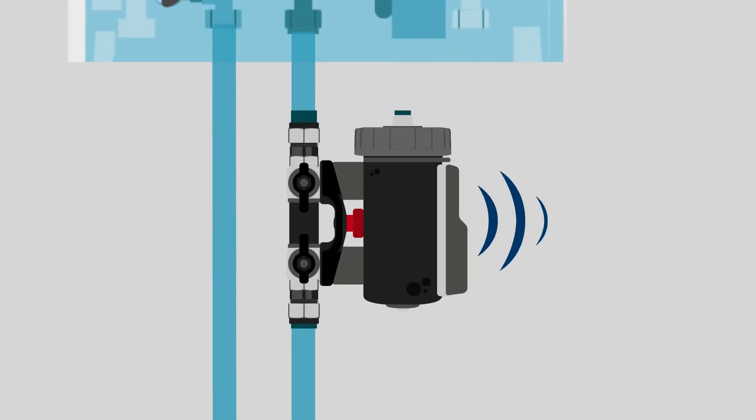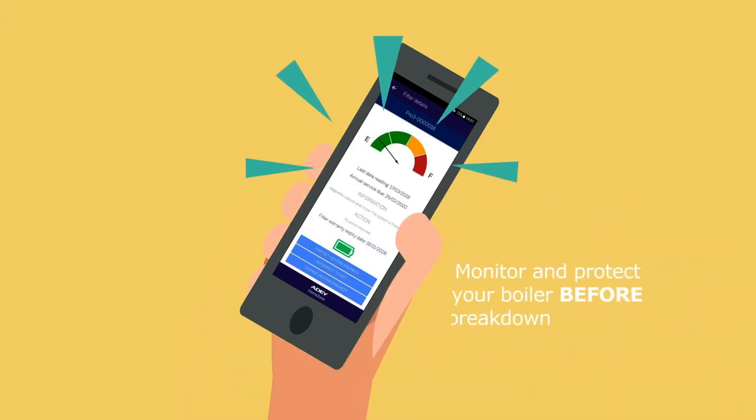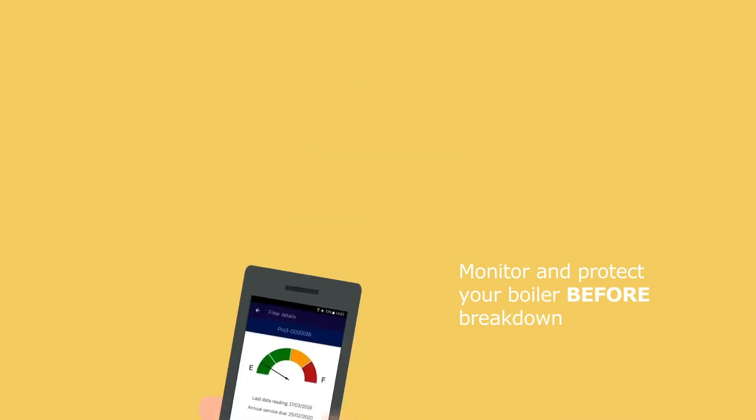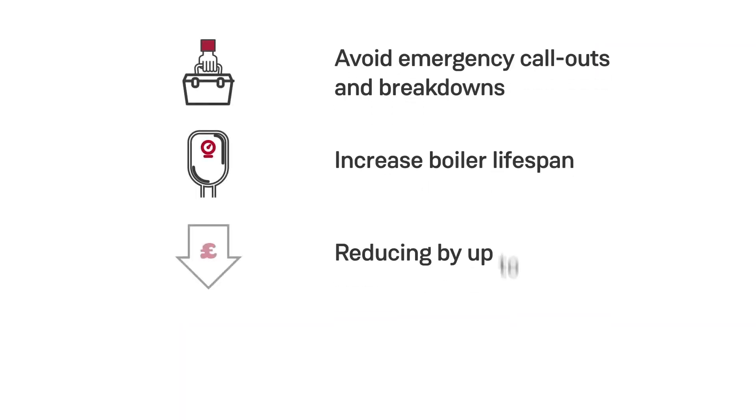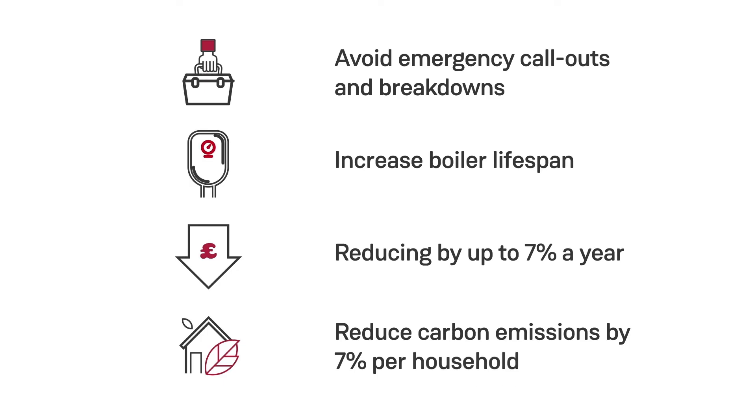Plus, our top-of-the-range AD MagnaClean Professional 3Sense filter even monitors the amount of sludge in your system, alerting you and your installer of any sludge build-up in your system before there's a danger of boiler breakdown. Smart!